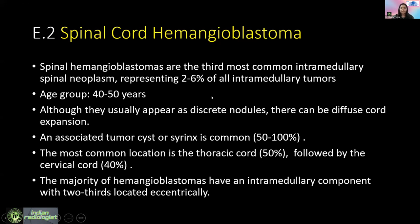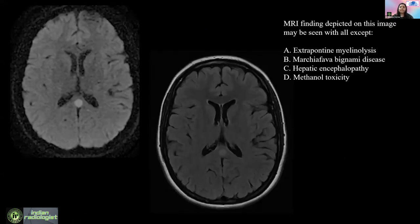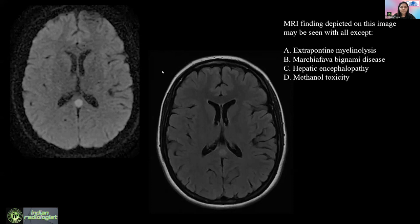This is another differential question. MRI findings depicted on this image can be seen with all except — these are diffusion and axial FLAIR images, and you have to identify what all can cause it, with the answer being the one which cannot cause this finding. 29 percent think it is option D, which is methanol toxicity.